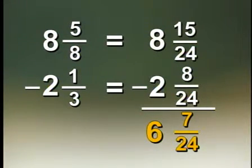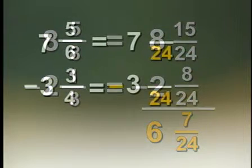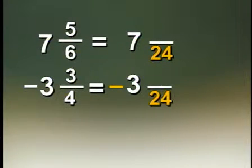Now, that wasn't so difficult. Here's another problem. 7 and 5 sixths minus 3 and 3 fourths. Notice again, we've got it set up. We write the whole numbers. We put the subtraction symbol, the minus sign, and we have our common denominator of 24.